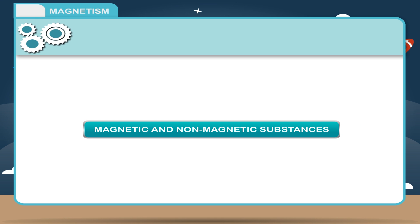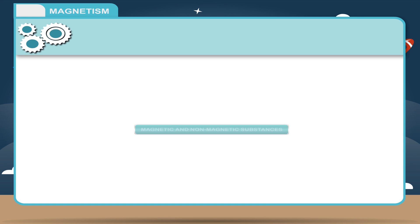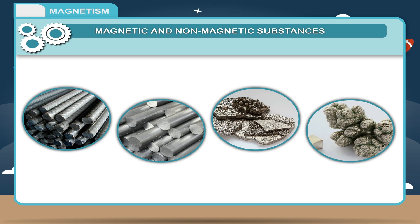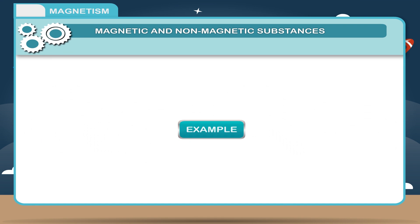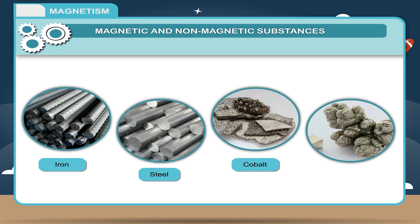Magnetic and non-magnetic substances: Substances which are attracted by a magnet are called magnetic substances. Examples: Iron, steel, cobalt and nickel are the magnetic substances.